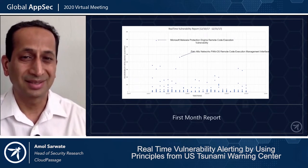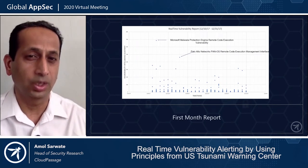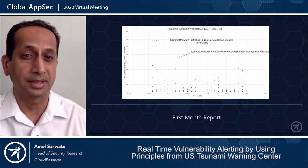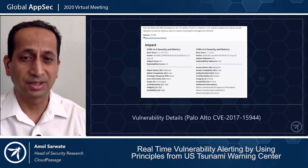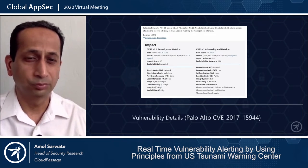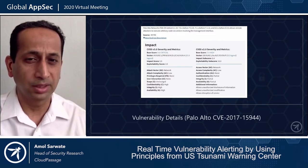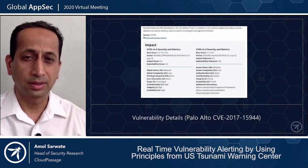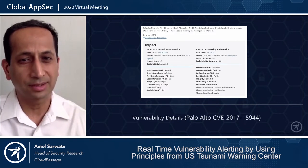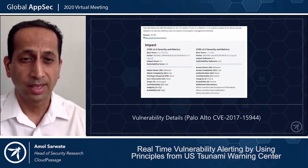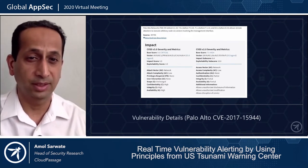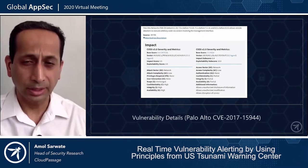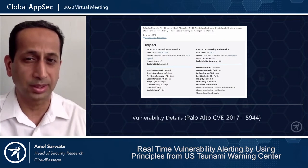Our researchers went through many other vulnerabilities manually to make sure the system's results were accurate — that vulnerabilities our researchers thought were high-profile were being ranked correctly as high-profile by the automated system. We said that's a great start and decided to keep the system running. The Palo Alto CVE had a CVSS score of 9.8. As you can see from the NVD screenshot, the attack vector was network, attack complexity was low, privileges required was none, user interaction was none — all indicators of a very dangerous vulnerability.